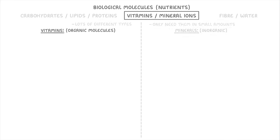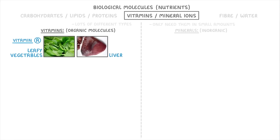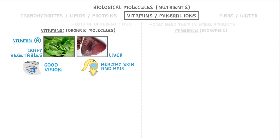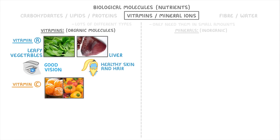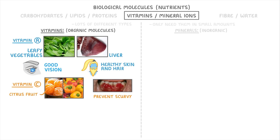If we start with vitamins, vitamin A can be gained from foods like liver or leafy vegetables, and you need it for good vision and to keep your skin and hair healthy. Then there's vitamin C, which you can get from fruit and vegetables — particularly citrus fruits like oranges — and you need this to prevent yourself from getting the disease scurvy.